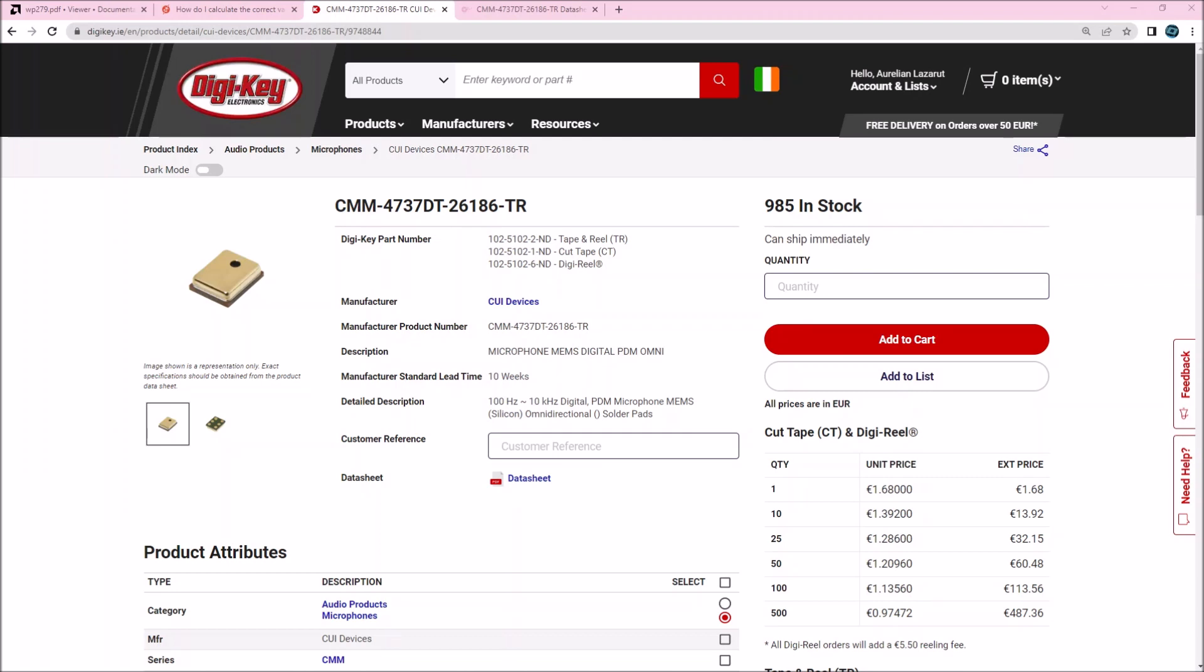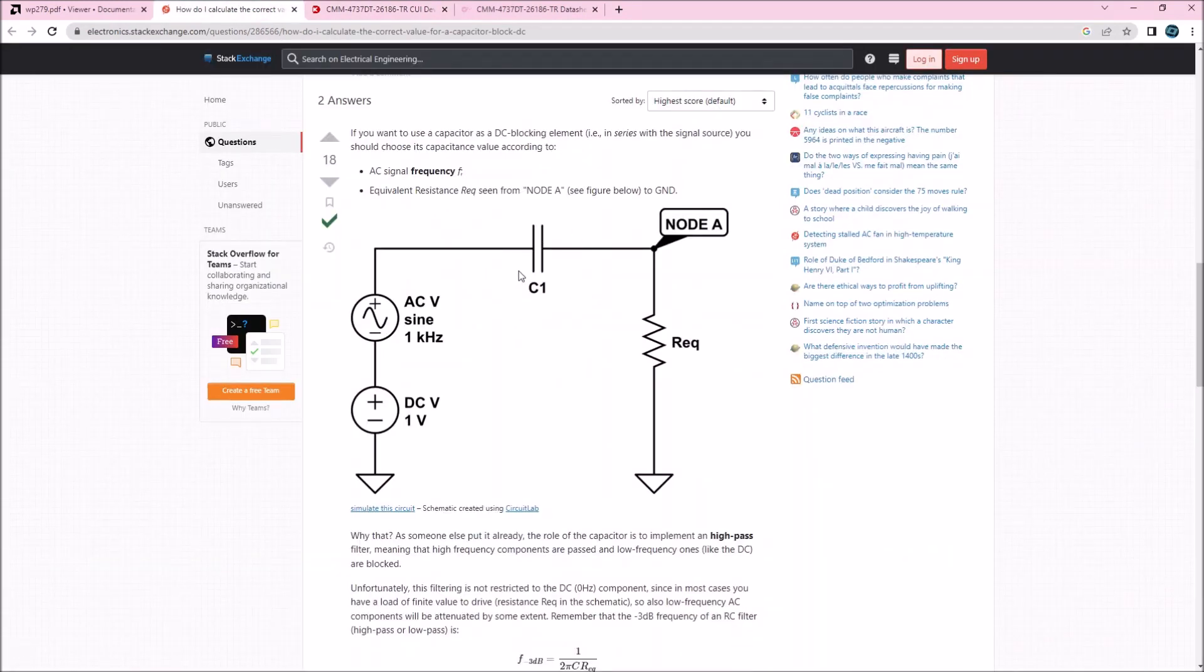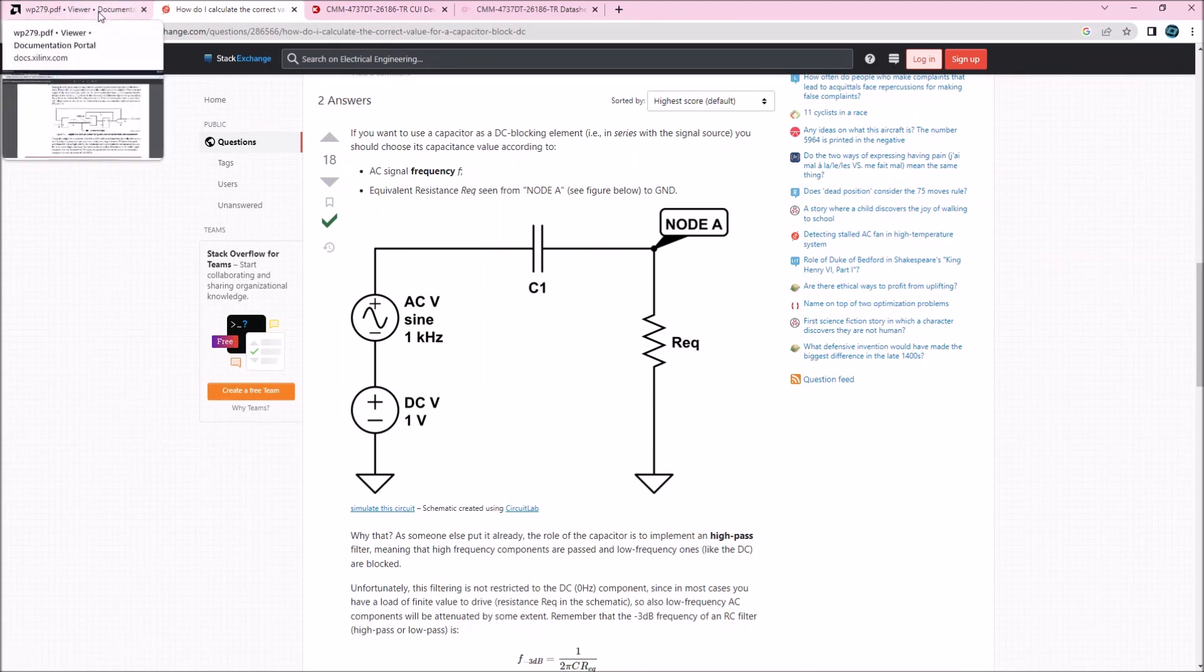Now that DC offset might be harmless for some applications, but in other applications it can be very annoying. In the analog world, it's very easy. What we do is insert a series capacitor which is going to block all the DC component. Obviously we can't do this in the digital domain, it's a little bit more complicated. But how we do this in the digital domain?